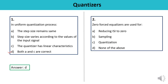Question 2: Zero-forced equalizers are used for — reducing ISI to zero, sampling, quantization, or none of the above? You must remember that zero-forced equalizers are used for reducing ISI — inter-symbol interference — to zero. So the correct answer is A.